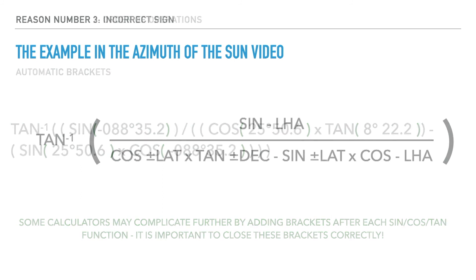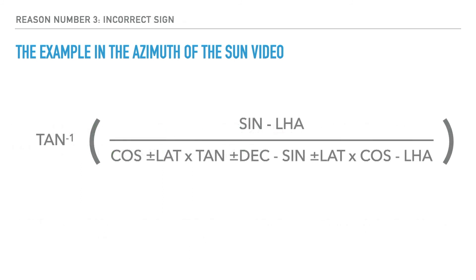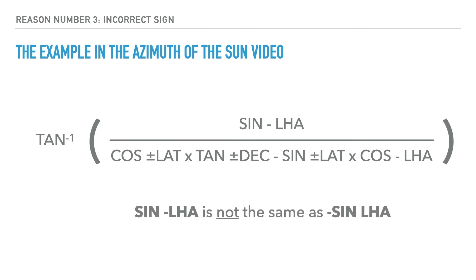The very last reason that people get the wrong answer is just down to not following the formula correctly. It is very important to note that where I state plus or minus lat, dec, or a negative LHA, this refers to the initial angle, not the result of the sine, cosine or tan function. To put this into very simple terms: sine negative LHA is not the same as negative sine LHA, and the same applies to other parts of the formula.